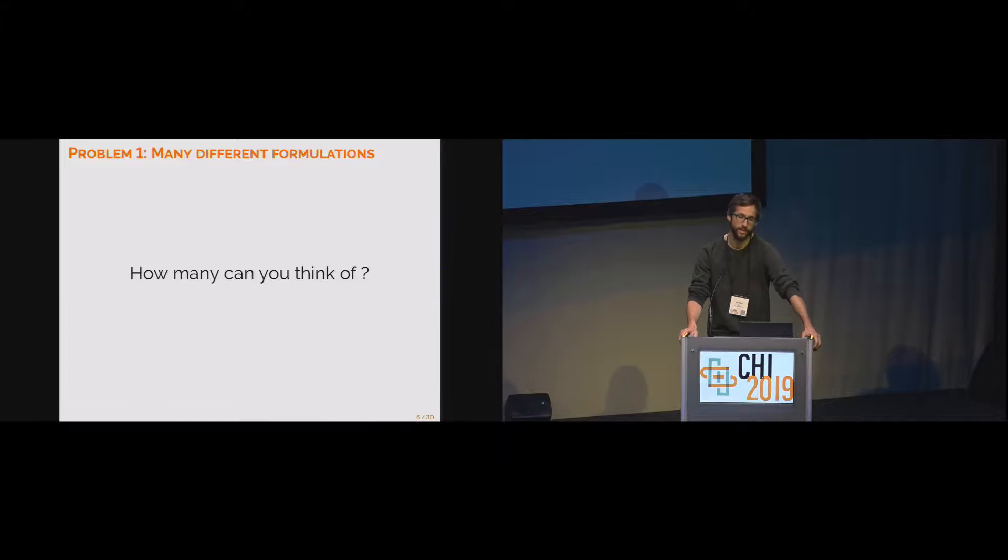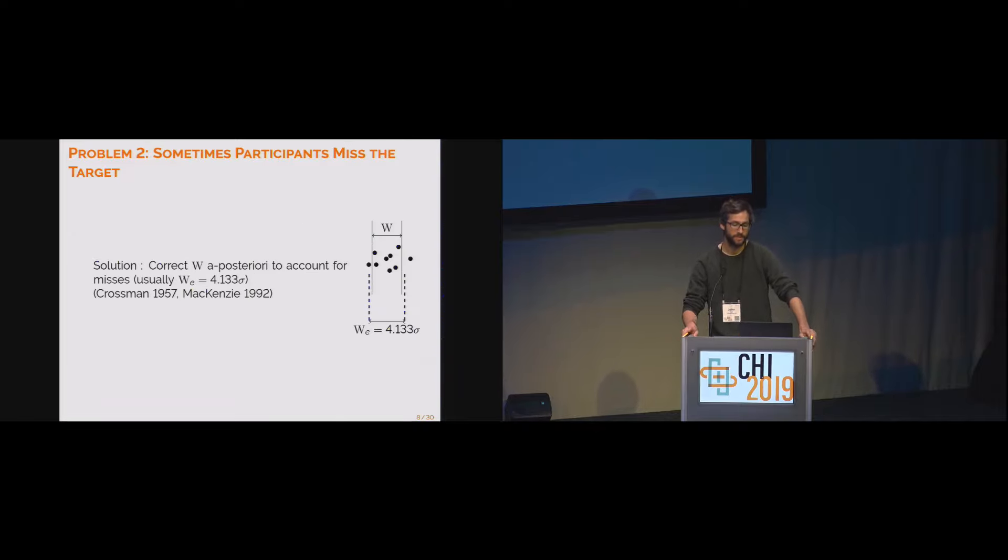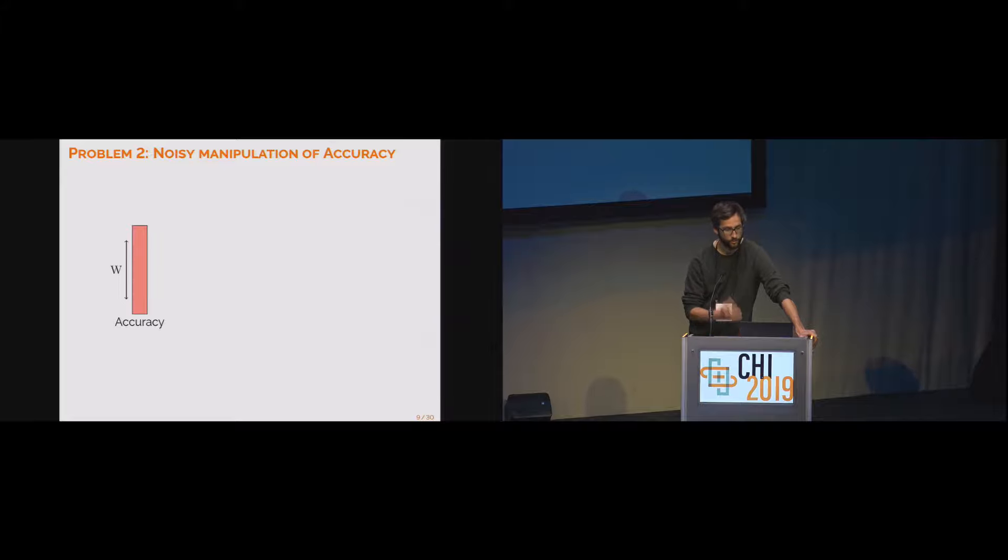The first problem is the problem of many different formulations. The question is how many different formulations can you think of? Personally I know about 15, probably more. The second problem is that sometimes participants miss the target. Typically what we do in HCI is we look at the actual distribution of endpoints, which are all the black bullet points. We measure their standard deviation, and then we multiply this by a constant factor. This is our effective width, WE, and we replace the width by this effective width. This was a solution first given by Crossman in experimental psychology, and then popularized by Mackenzie in HCI.